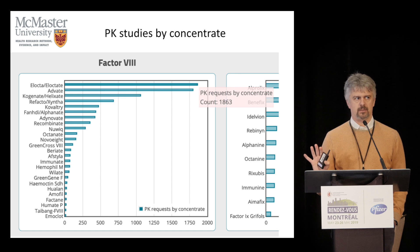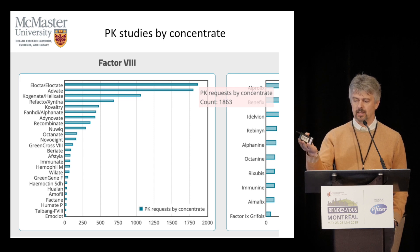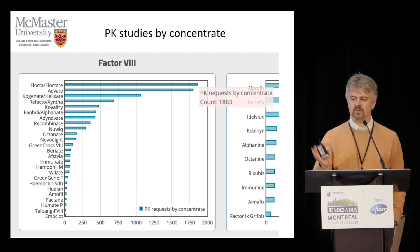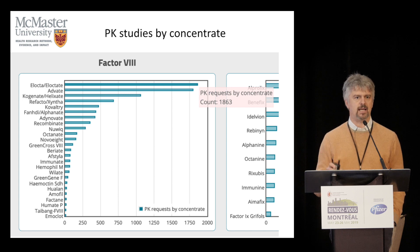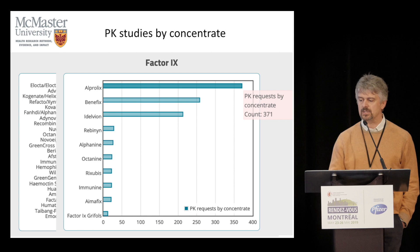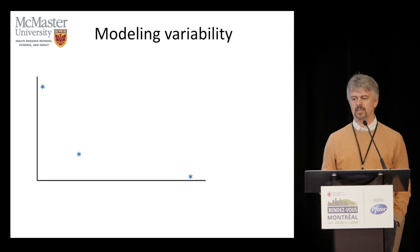Any concentrate, no matter what you are treating on. I'm showing here for factor VIII — Loctate is the one we have more experience on, close to 2,000 profiles, and 1,700 for Advate and so on. There is no other database of this size about how factor VIII and IX behave. For factor IX you see 371 profiles on Prolix. So it's a rich database, and we are learning a lot by looking at it.